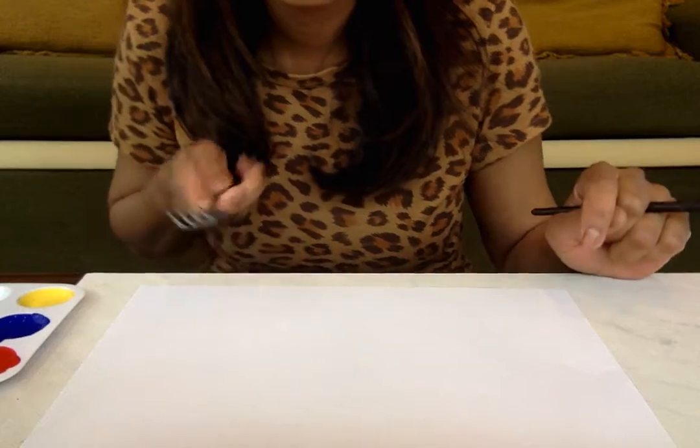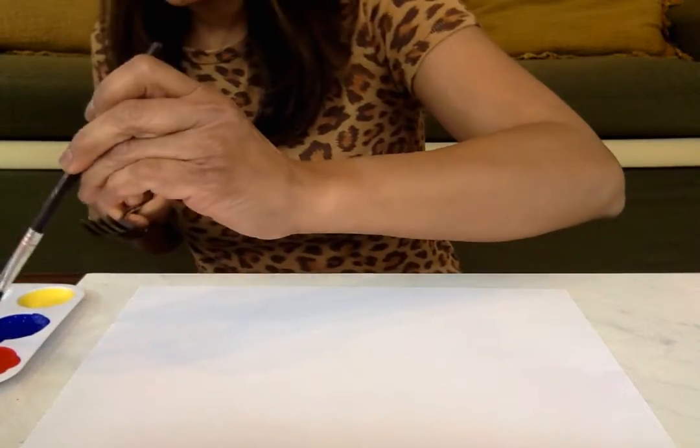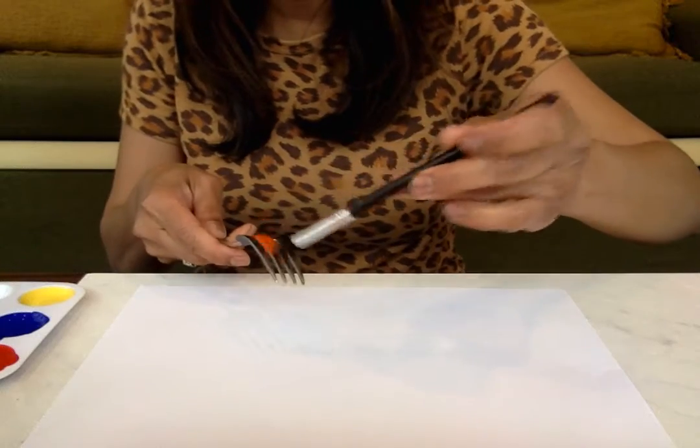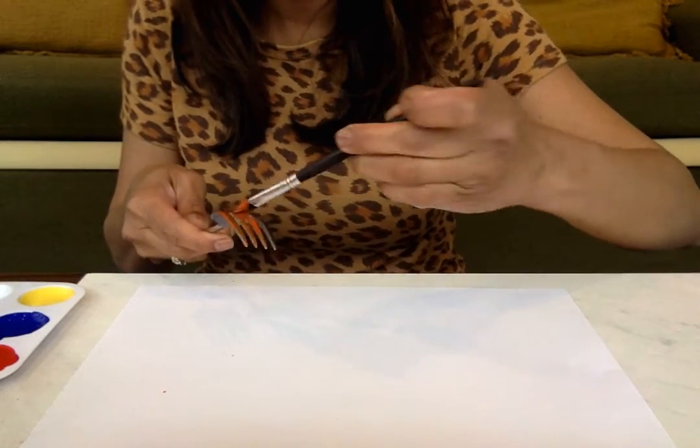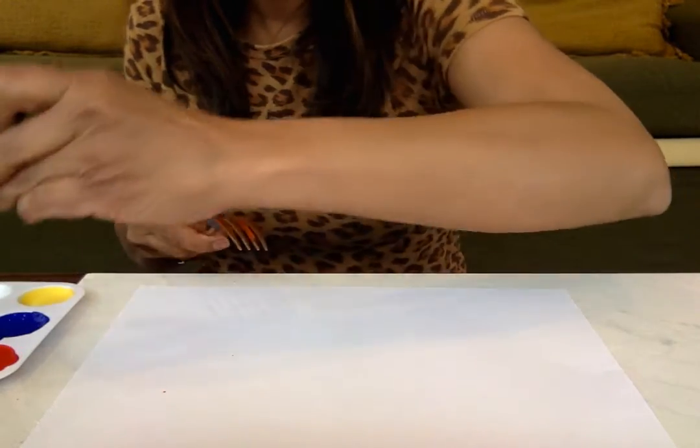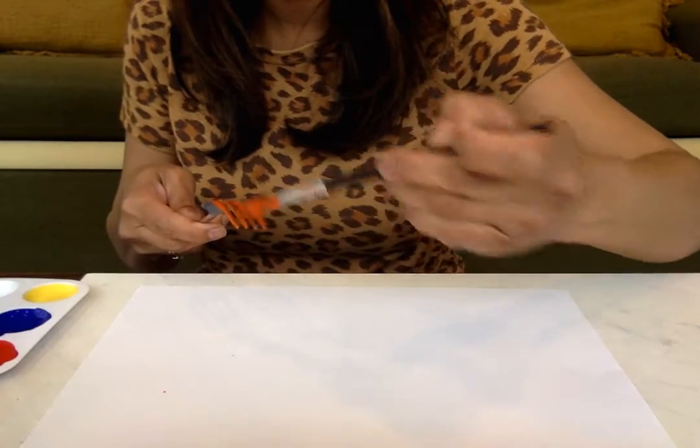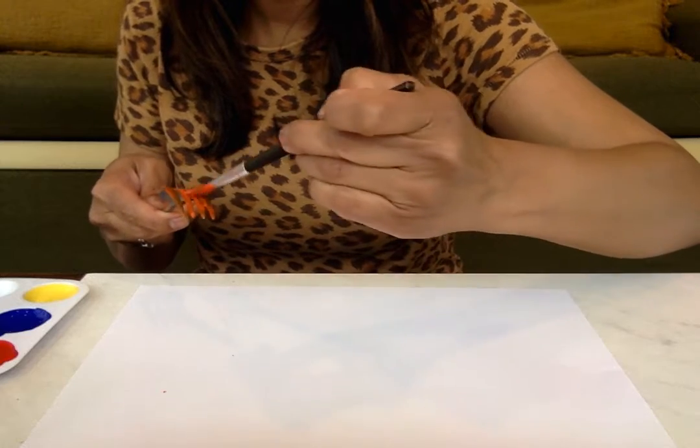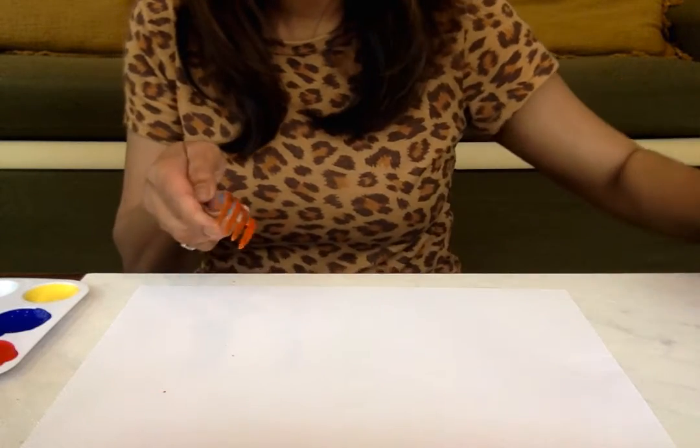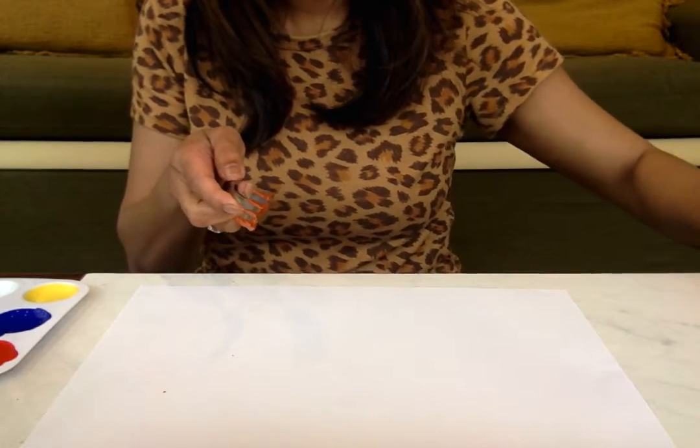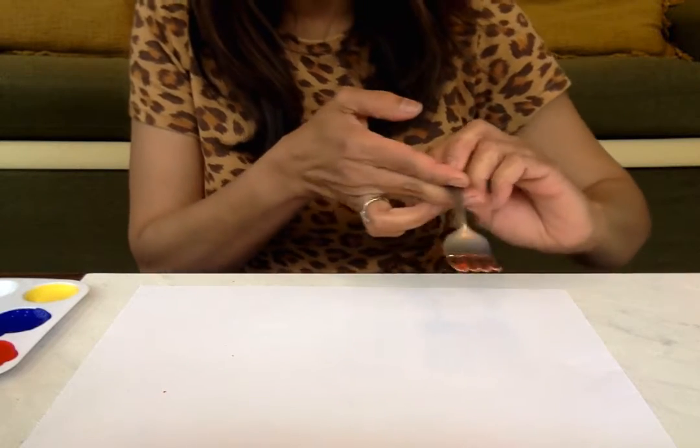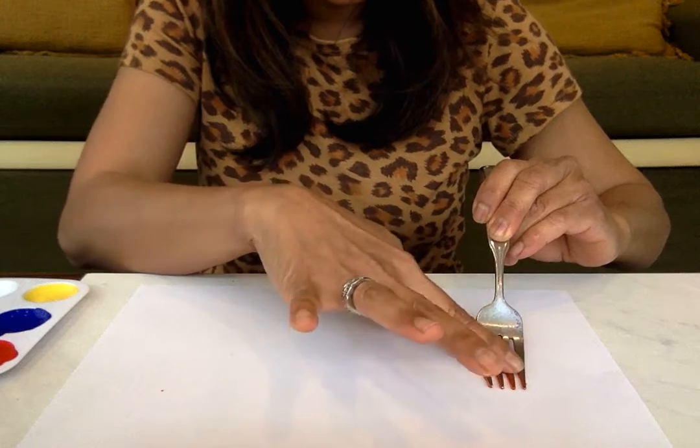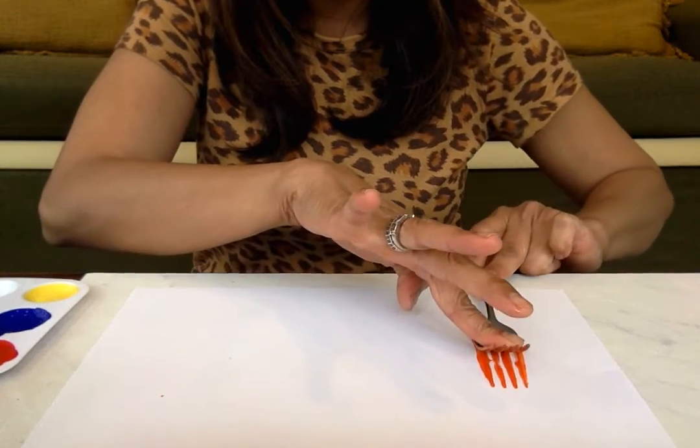I'm going to make some flowers, orange flowers. You just need to paint the back of the fork because you're going to press the fork down on the paper. This is my first flower and it's going to be an orange flower. Put it right here. Press it down and back and down.